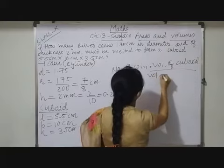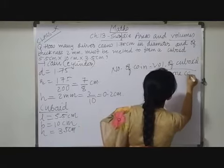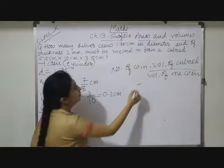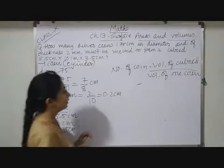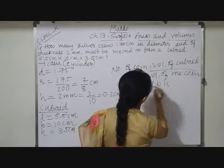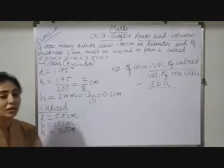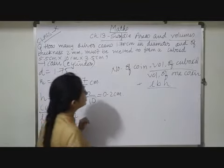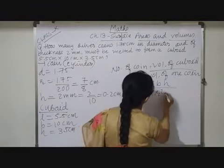Now see, volume of a cuboid, we are having a formula L × B × H, and volume of a coin which is having a shape of cylinder, so its formula will be π r² h. Now place all those values, we will get the answer.